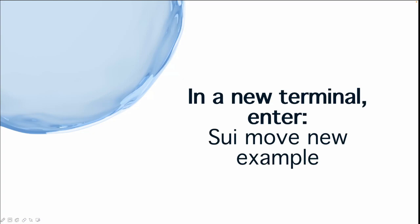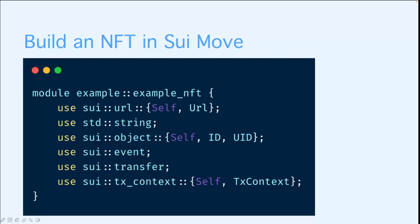In a new terminal, you can enter the swaymove new example to initialize a new directory. Under the sources we just created, we will create a new move file called example_nft.move. And here are the Swaymove APIs that we use to build an NFT.